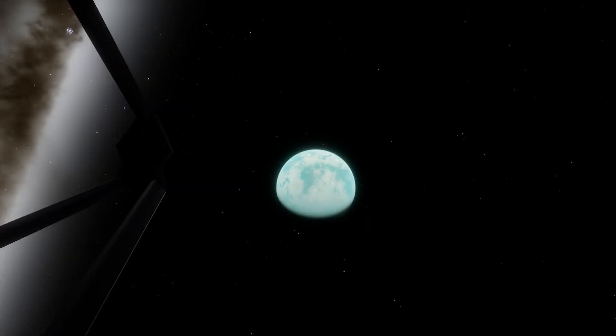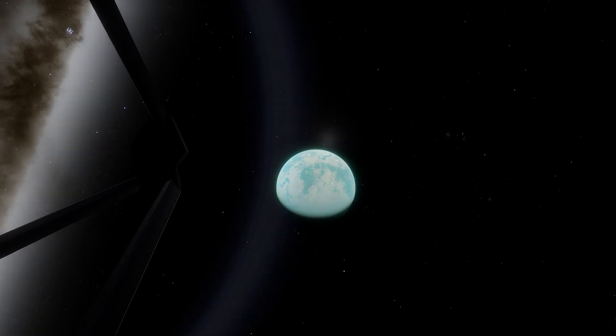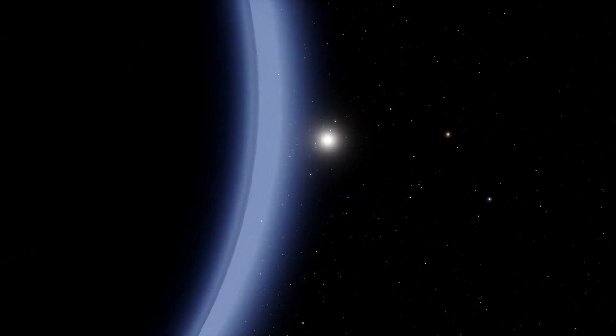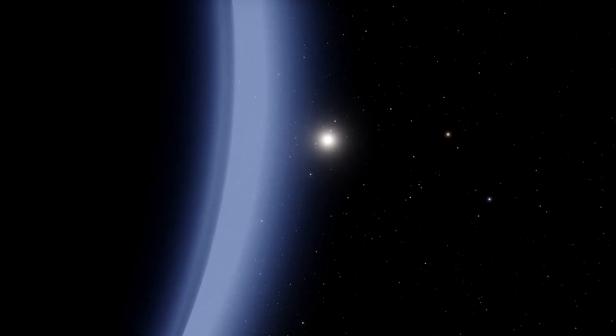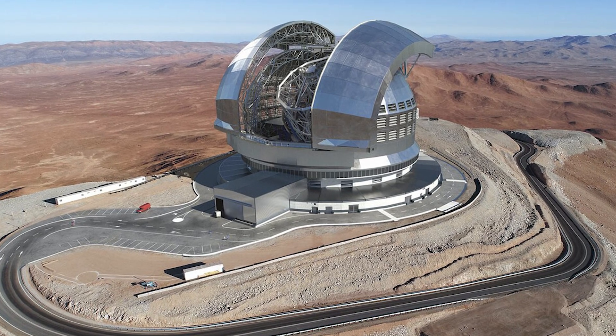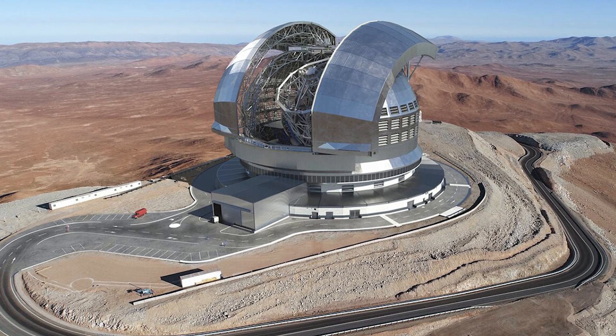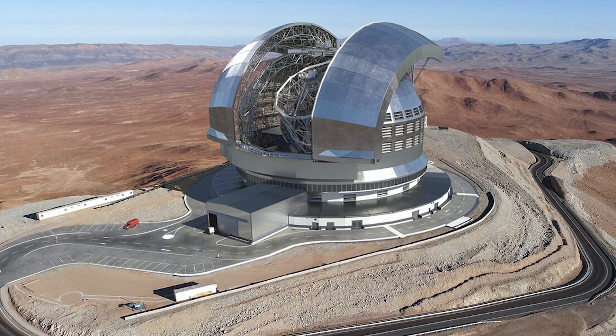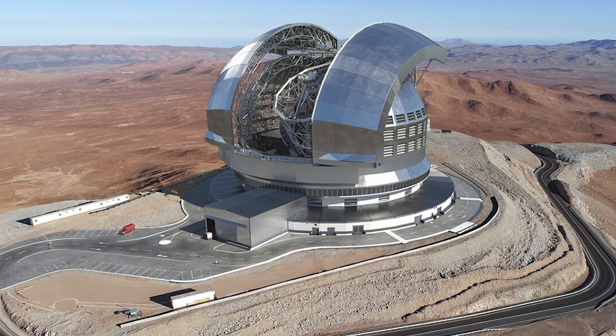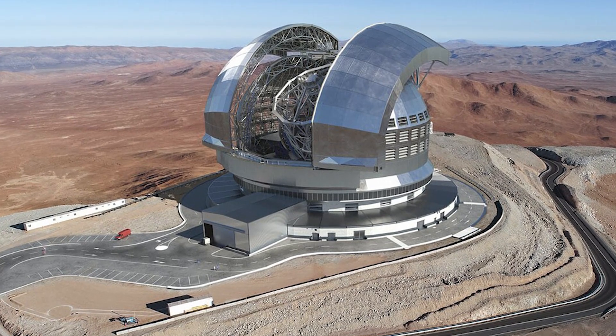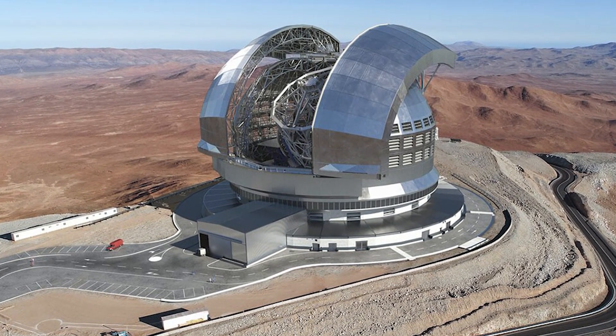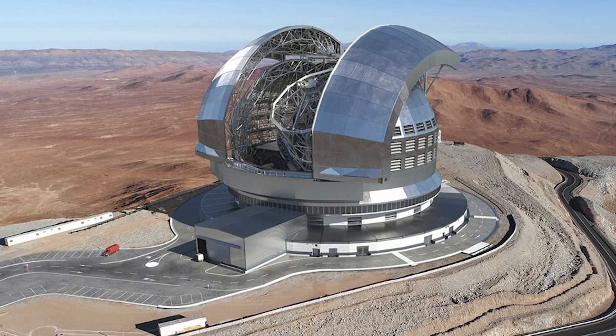It is important to keep in mind that the JWST cannot explore all potential habitable worlds, as it has limited capabilities and can only observe some of the exoplanets closest to Earth. Therefore, astronomers are turning to ground-based observatories such as the Extremely Large Telescope, the ELT, which is expected to become operational in 2028, and allow for a deeper investigation of the atmospheric structure of distant exoplanets.